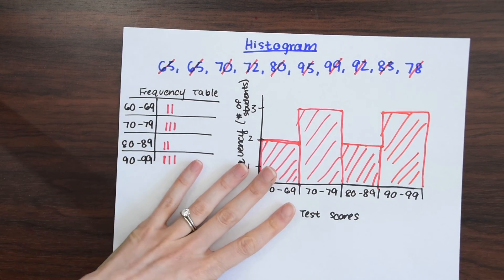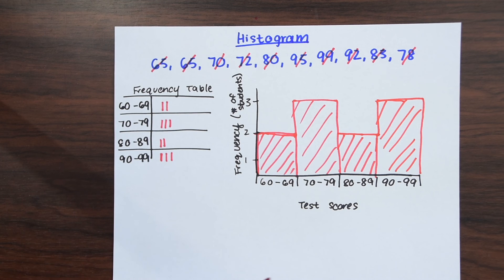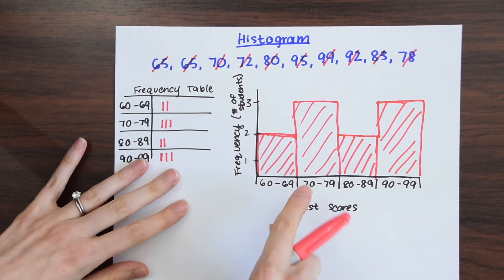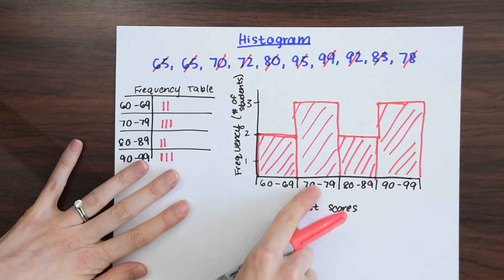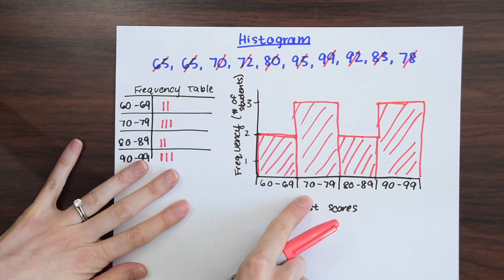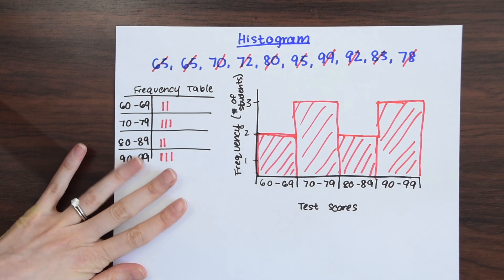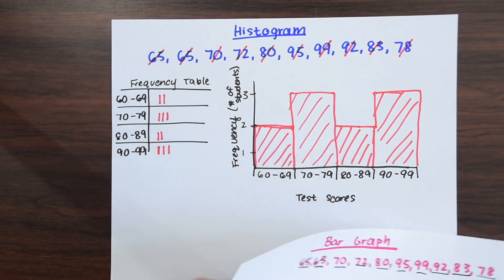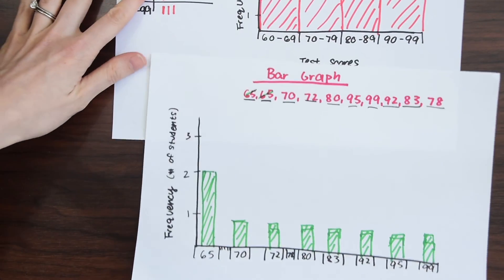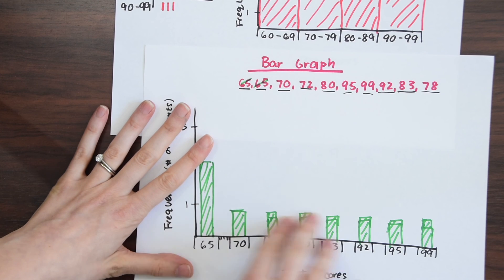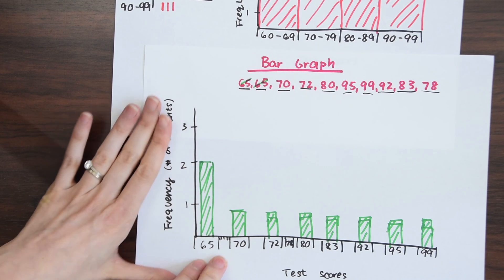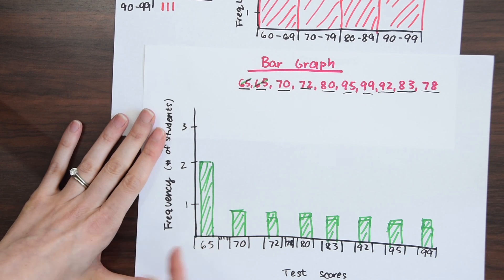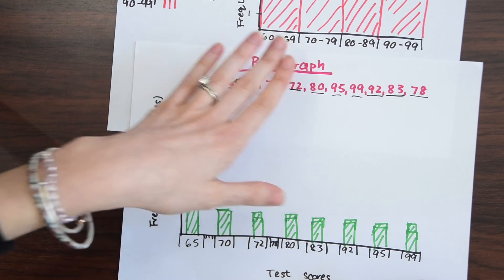Notice the picture we have here now — with this histogram we can actually see more of a pattern. We can now see that more students are scoring in the 70s and the 90s. This tells us much more information than when we look at our bar graph, which kind of has everything blend together and looks flat. It looked like most people were getting 65s, which doesn't tell us that most people are actually getting in the 90s and 70s.